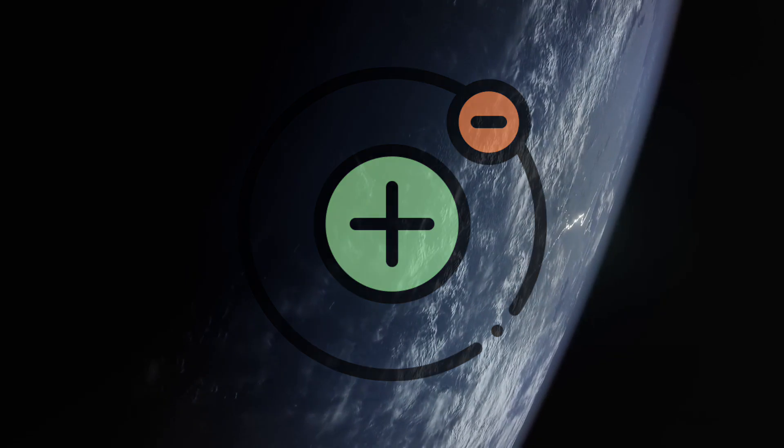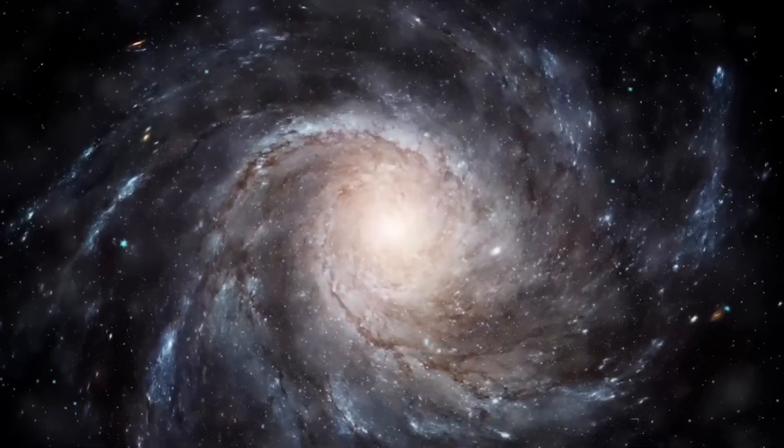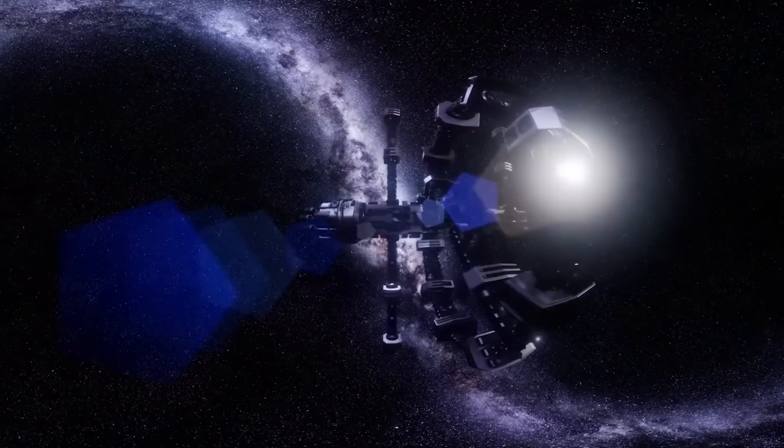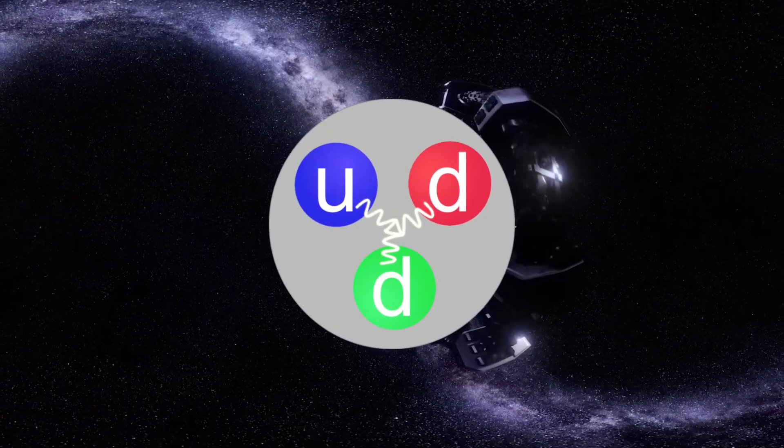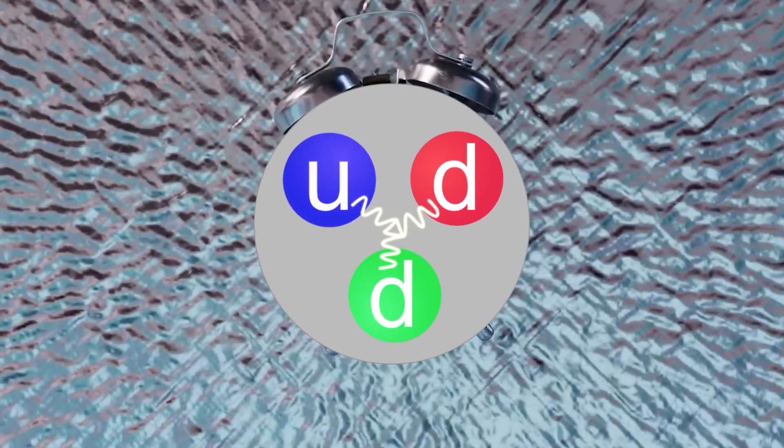If we zoom out to the nucleus, we see particles of protons and neutrons. But if we zoom even deeper into them, we see quarks. Quarks are the smallest known particle, and scientists believe that this is where it stops.